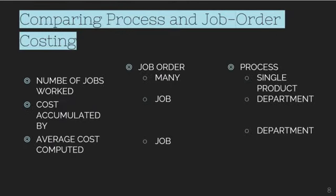Comparing process and job order costing: for the number of jobs worked, job order has many while process has a single product. Cost is accumulated by job for job order, and by department for process costing. Average cost is computed from the job in job order costing and from the department in process costing.